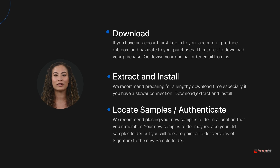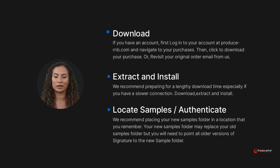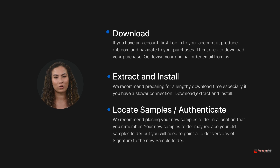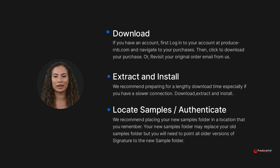If you have an account, first log in to your account at producerrnb.com and navigate to your purchases. Then, click to download your purchase. Or, revisit your original order email from us. A search in your email for Signature R&B or Produce R&B downloads should bring up the email.